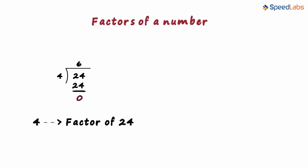It also means that 24 is divisible by 4, or you can say that 24 goes exactly into 4. In short, the factor of a number is an exact divisor of that number.